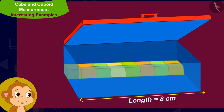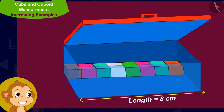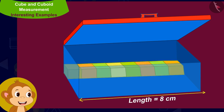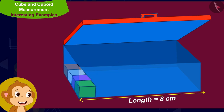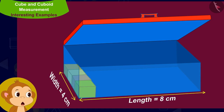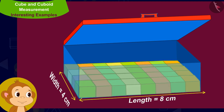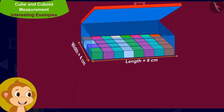The compass box is 8 centimeters long. This means the length of the compass box is equal to 8 cubes of dimension 1 centimeter each. Its width is 4 centimeters, or equal to 4 cubes of dimension 1 centimeter each. One layer of the compass box will have the number of cubes in its length times the cubes in its width.